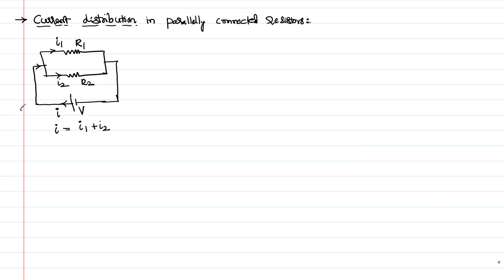As the resistors are connected in parallel, whatever voltage is available at the source is available at each resistor. So V1 and V2 are actually equal to the voltage connected to the system itself — V itself.